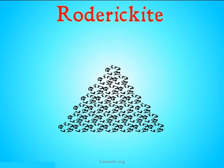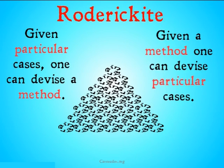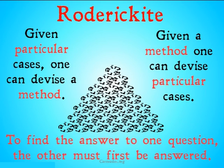What this leaves us with is: if we're given particular cases, we can derive a method; and given a method, we can divide particular cases. But if we're given neither, there's no way for us to divide the sand. To answer one question, we must first answer the other and vice versa. So if we are given neither a method nor particular cases of what rogerkite is, there is no way for us to divide the sand into what is rogerkite and what isn't.